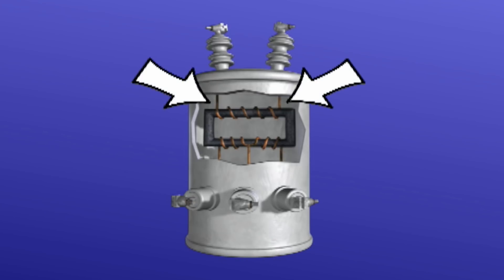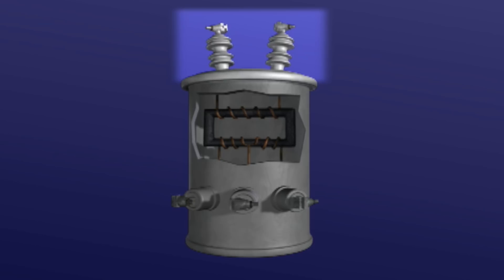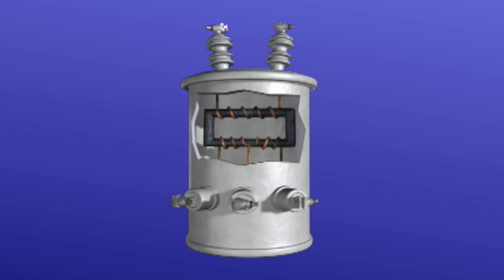The primary winding of a transformer is rated and insulated for a specific primary voltage. Voltage is applied to the primary winding by connections to a primary distribution system. One or more insulated primary bushings mounted on the transformer housing provide the connection points between the ends of the winding and the primary system.